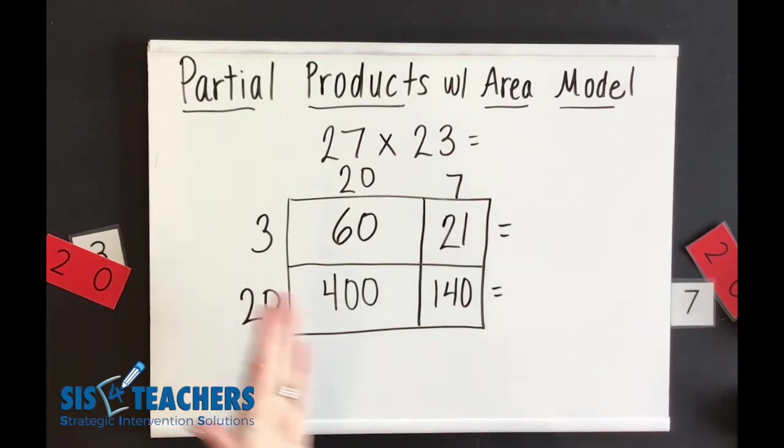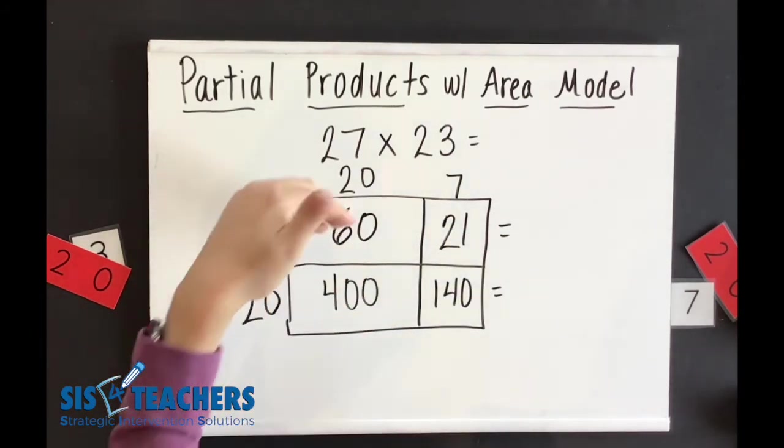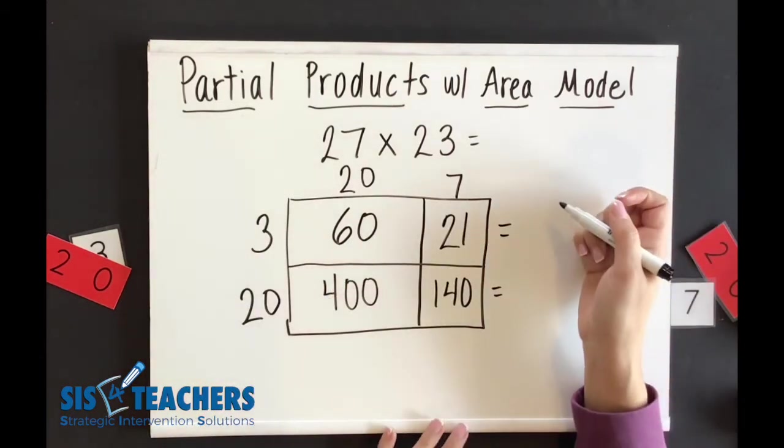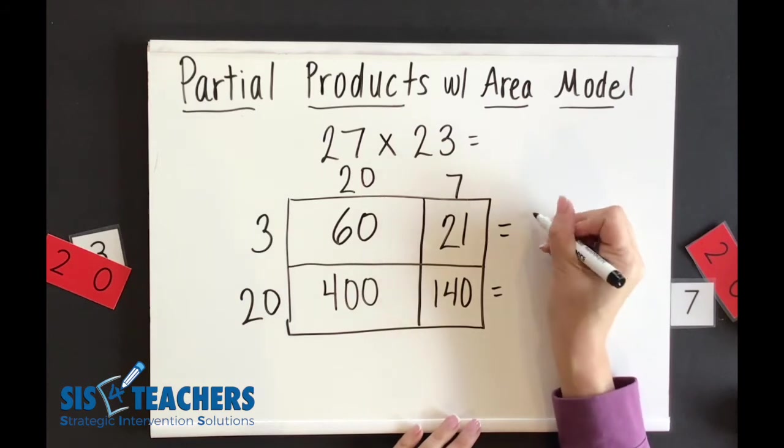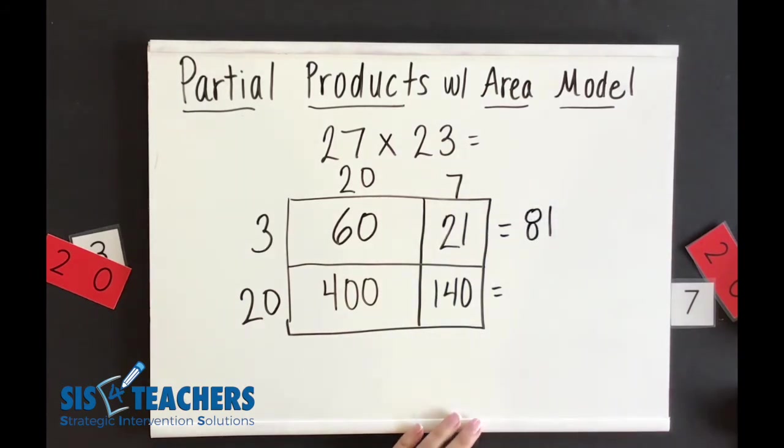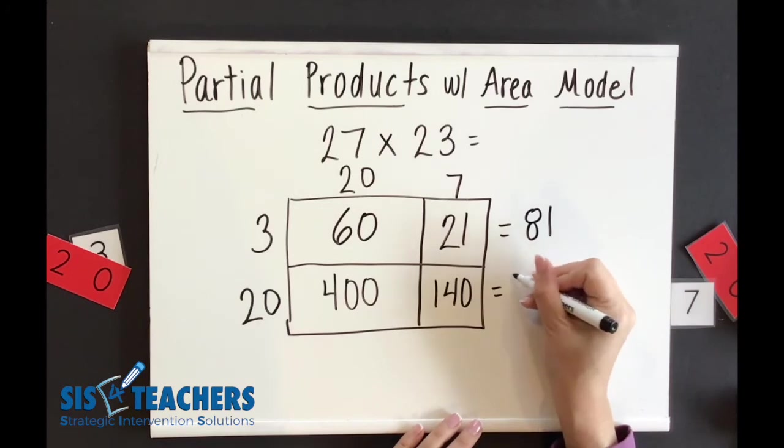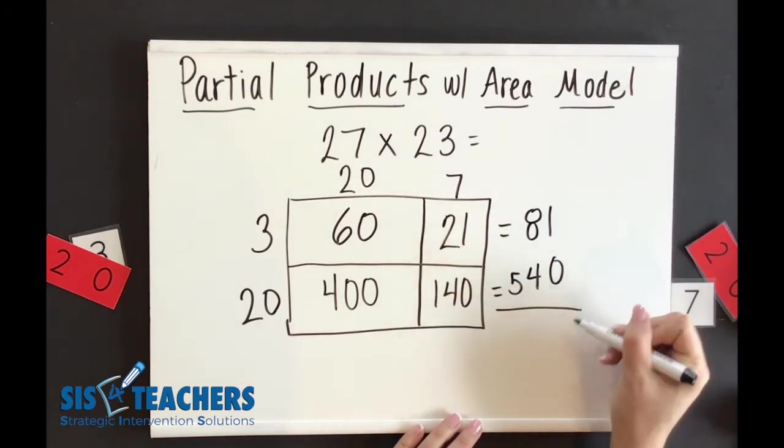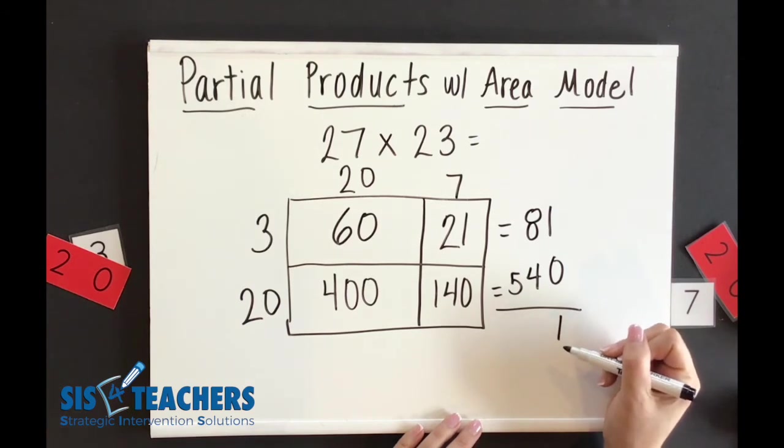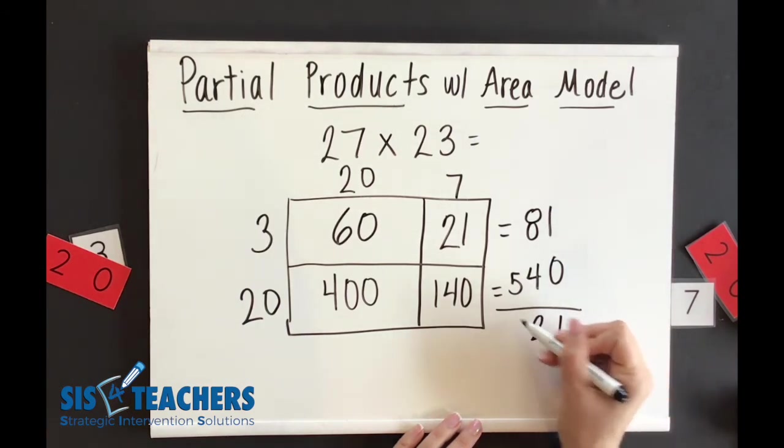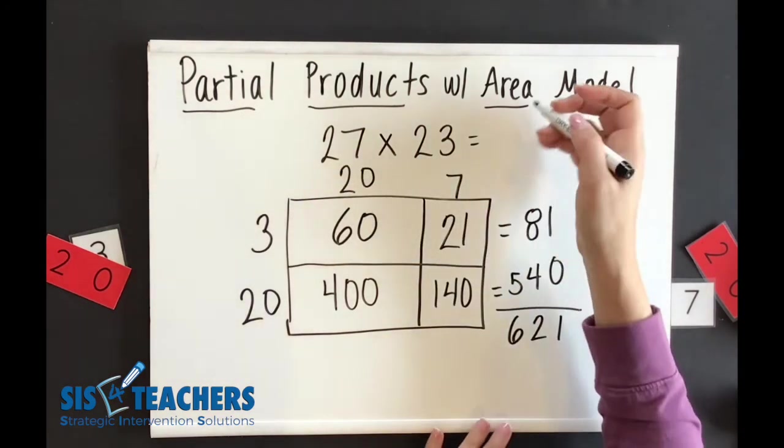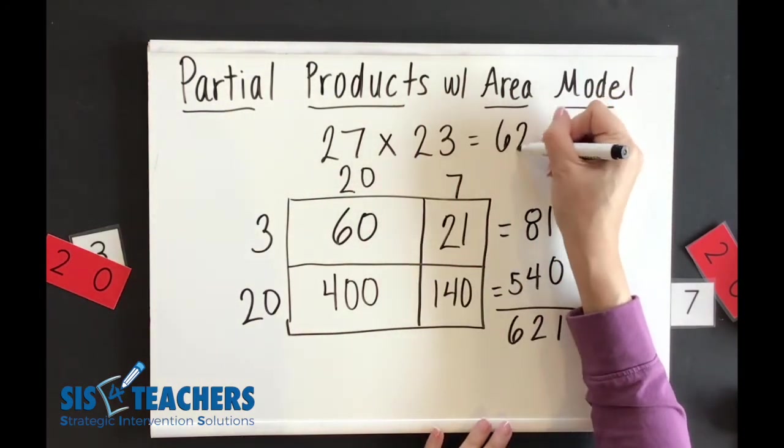Some people like to add it going across. I like to do it across because it will relate to the traditional problem that we'll be doing in another video. But you can also add them going down as well. And so I'm going to go across and I'm going to equal this to 81. And then I'm going to go across here and I know that that equals 540. When I go ahead and add this all together, I know that I have 621. So the answer of 27 times 23 is 621.